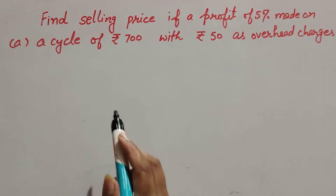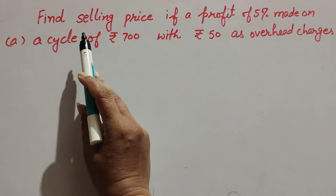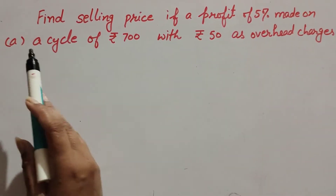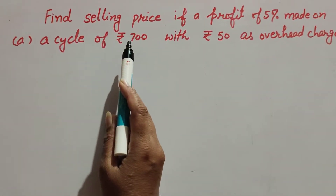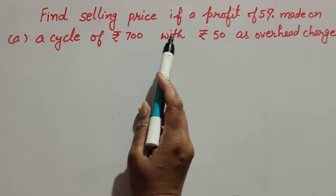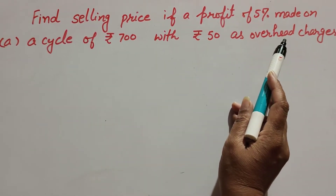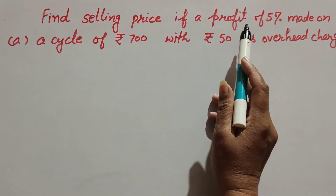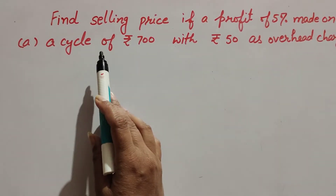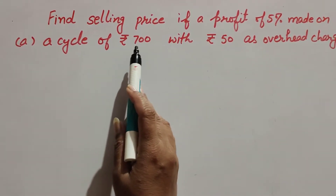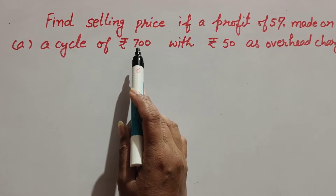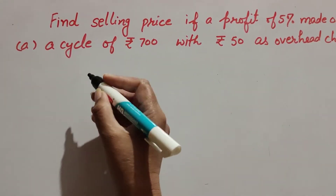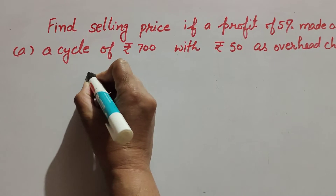Hello friends, welcome to my channel. In this video we discuss finding the selling price if a profit of 5 percent is made on a cycle of rupees 700 with rupees 50 as overhead charges. We need to find the selling price given profit 5 percent, cost price of the cycle, and overhead charges. Let's start.